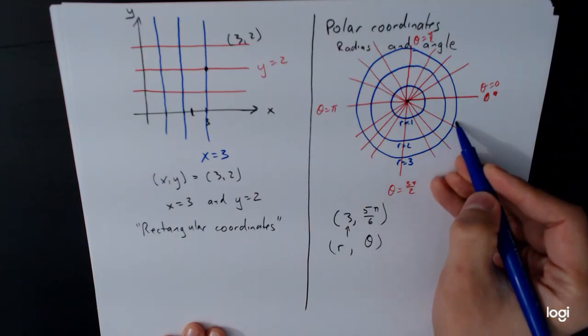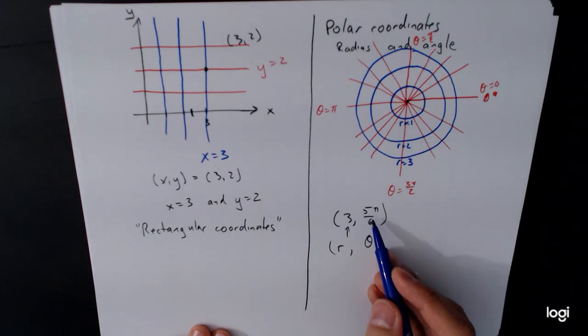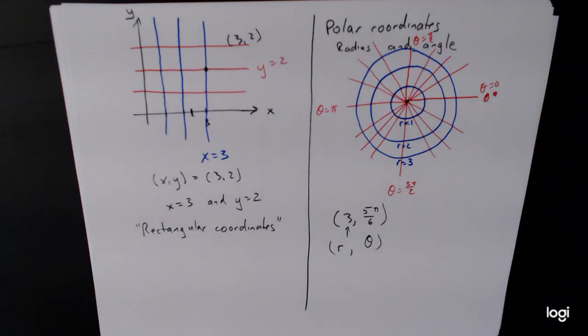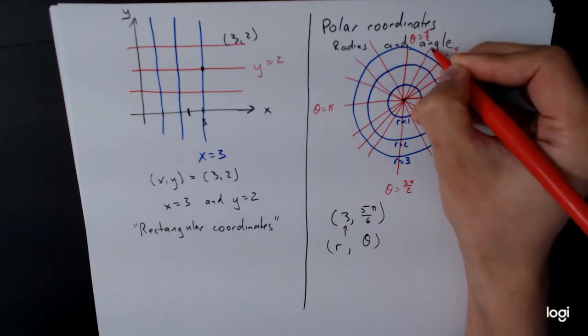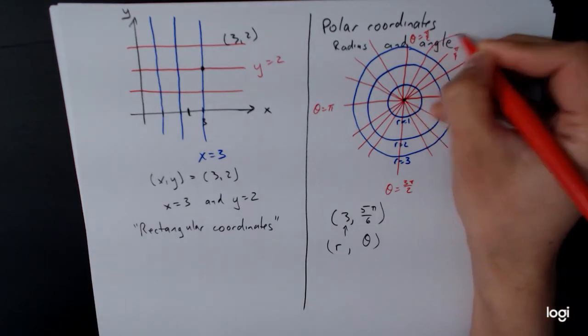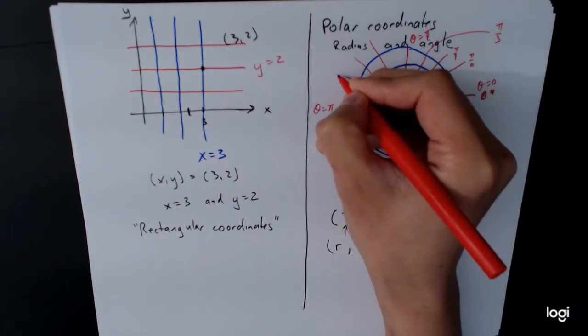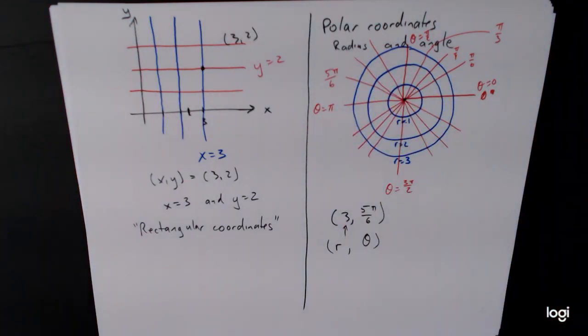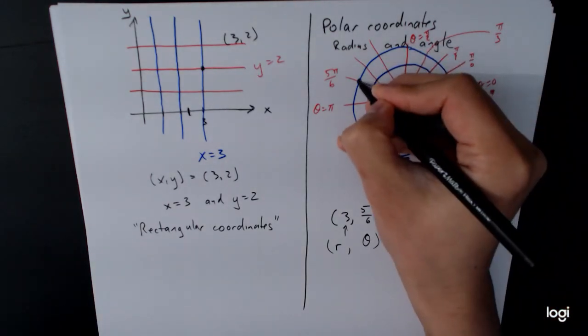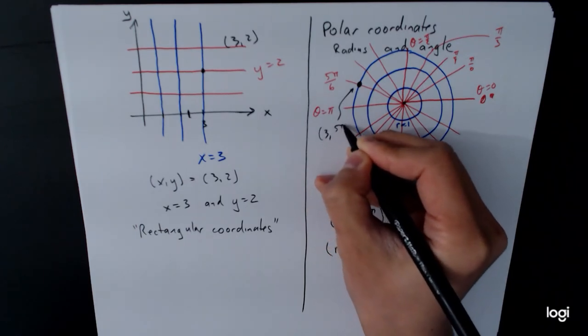So circle of radius 3 is this one. And the angle being 5 pi over 6. Now I didn't label any of these. But if you remember the unit circle, this is π/6. This is π/4. This one right here is π/3. And keep working your way around. With those known angles, this one ends up being 5π/6 over here. And so at this point, (3, 5π/6) is right here. So circle of radius 3 at the angle 5π/6.